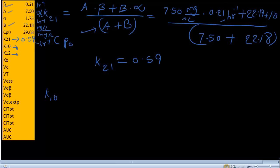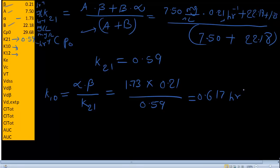Now the next calculation we need to do is k10. What is the formula for k10? k10 is alpha times beta divided by k21. We have the information of alpha and beta from here, so 1.73 times beta that is 0.21, divided by k21 that is 0.59. If you solve this you'll get a value of 0.613 hour inverse.